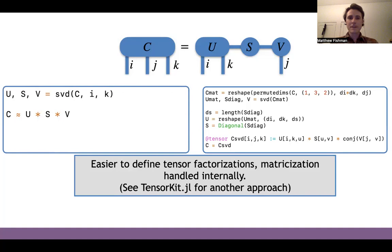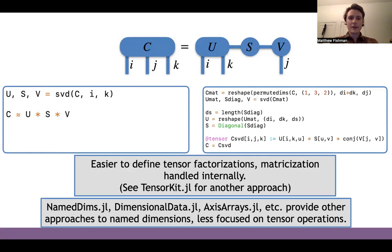iTensor makes it easier to define tensor factorizations because the matricization happens internally. iTensor has a similar design philosophy to Julia libraries like NamedDims, DimensionalData, AxisArrays, and the Python xarray library in that it has labeled dimensions. However, the interface is different and more geared towards tensor operations and doing a lot of tensor contractions and additions.